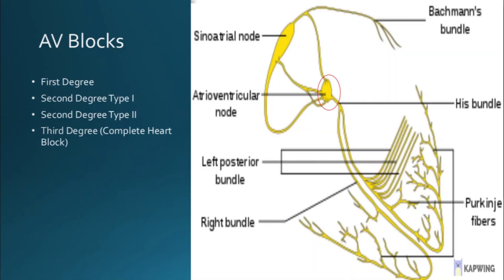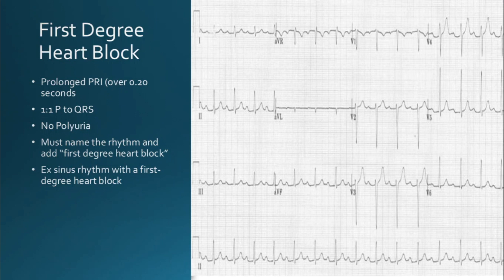Now on to AV blocks. The AV blocks consist of first degree, second degree type 1, second degree type 2, and third degree — also called complete heart block. Each of these is caused by dysfunction of the AV node. A first degree heart block occurs when the impulse is slowed through the AV node, which delays action potential from reaching the ventricles, thus prolonging your PR interval, which is usually greater than 0.2 seconds.